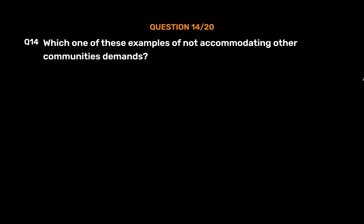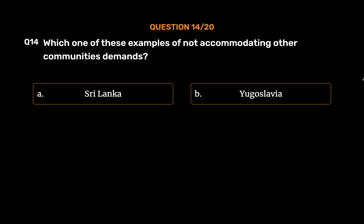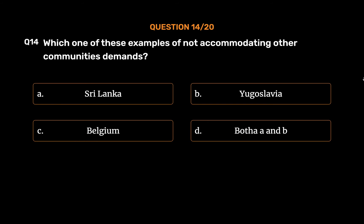Question number 14. Which one of these is an example of not accommodating other communities' demands? Option A: Sri Lanka. Option B: Yugoslavia. Option C: Belgium. Option D: Both A and B.